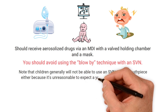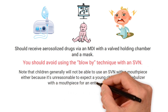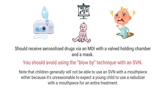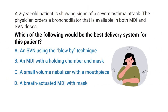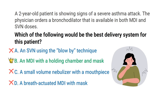Also note that children generally will not be able to use an SVN with a mouthpiece, because it's unreasonable to expect a young child to use the nebulizer with the mouthpiece for an entire treatment. By breaking down the question and using what we know about aerosol drug delivery in children, we can determine that the correct answer is B — an MDI with a holding chamber and mask.